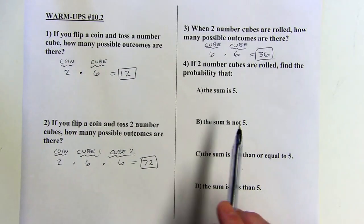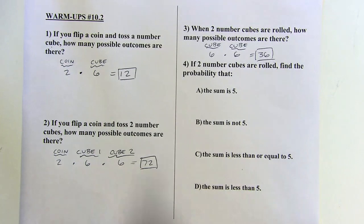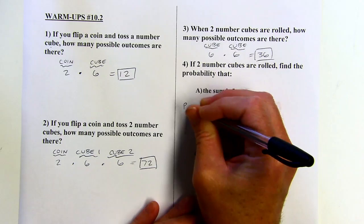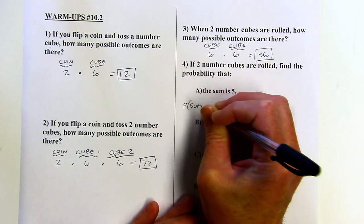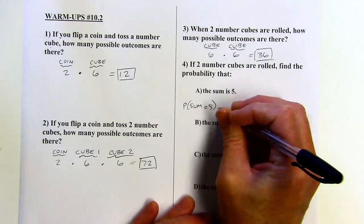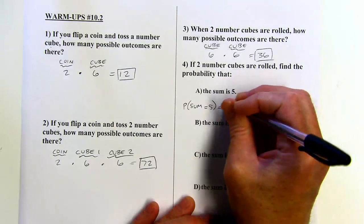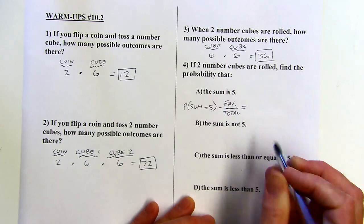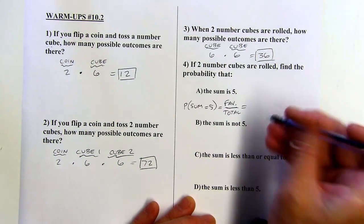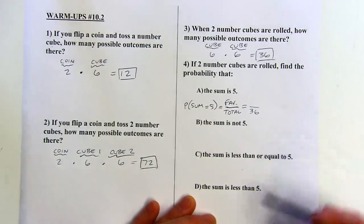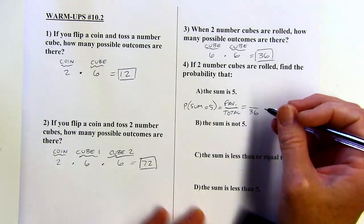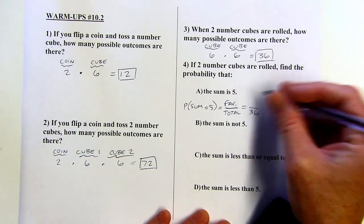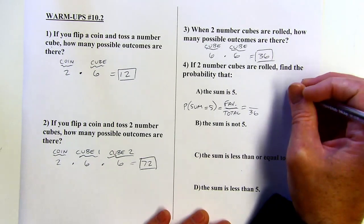That brings us to this next one: if two number cubes are rolled, let's find the probability that the sum is five. For probability, we do favorable outcomes over total outcomes. The total outcomes when rolling two number cubes is 36. So I've got to figure out how many possible ways we could get a sum of five. I'm going to make a little chart to figure that out.